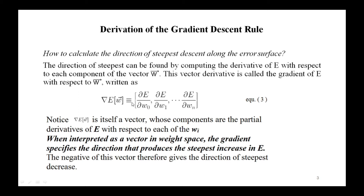The gradient of E with respect to w-vector is equivalent to the vector: delta E divided by delta w-naught, comma delta E divided by delta w1, comma delta E divided by w2, and so on up to delta E divided by delta w-n. Notice that this parameter — the gradient of E with respect to w-vector — is itself a vector, whose components are the partial derivatives of capital E with respect to each w-i.